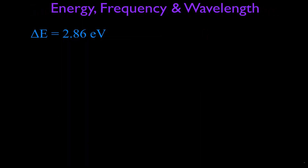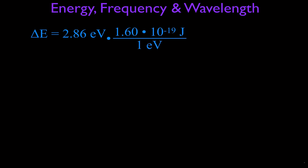So when we go from a transition from N5 to N2, the difference in energy in electron volts is 2.86 electron volts. When we use the subsequent equations, the energy has to be in joules. So first we're going to convert electron volts to joules. We know that one electron volt is 1.6 times 10 to the minus 19 joules, which gives us 4.58 times 10 to the minus 19 joules.